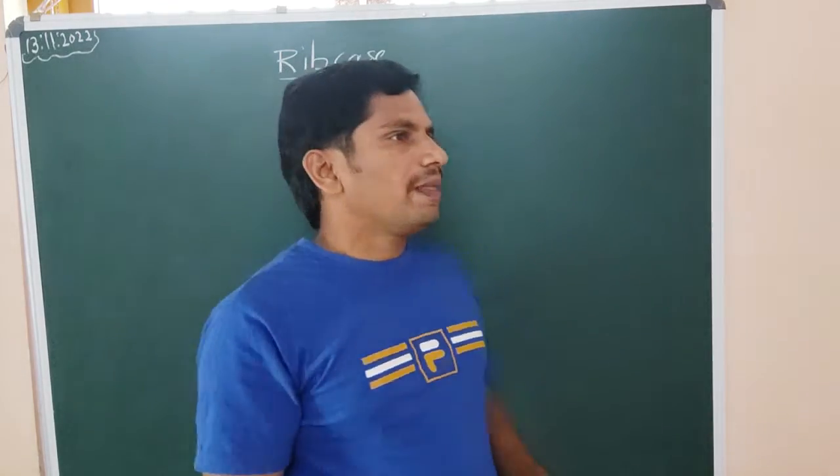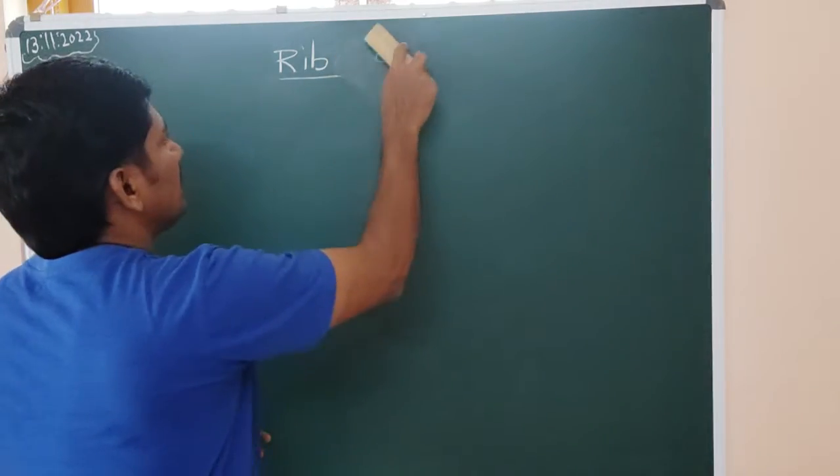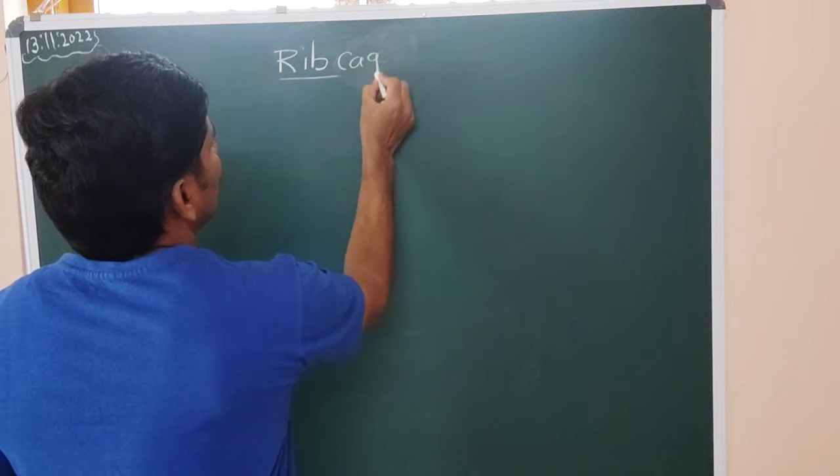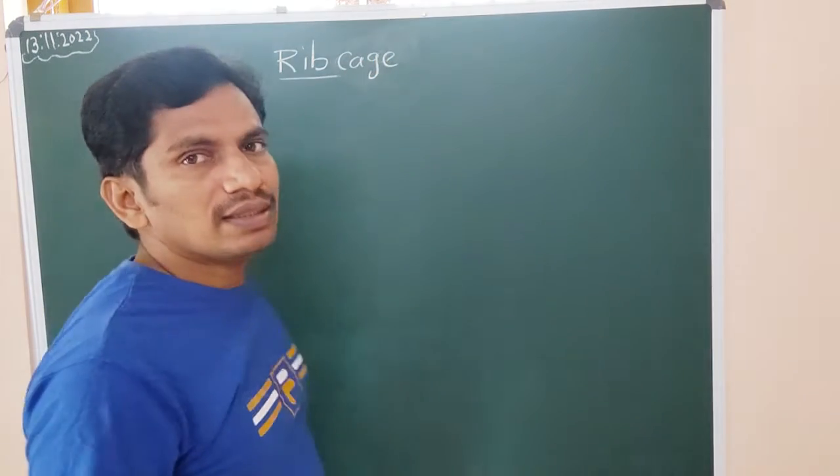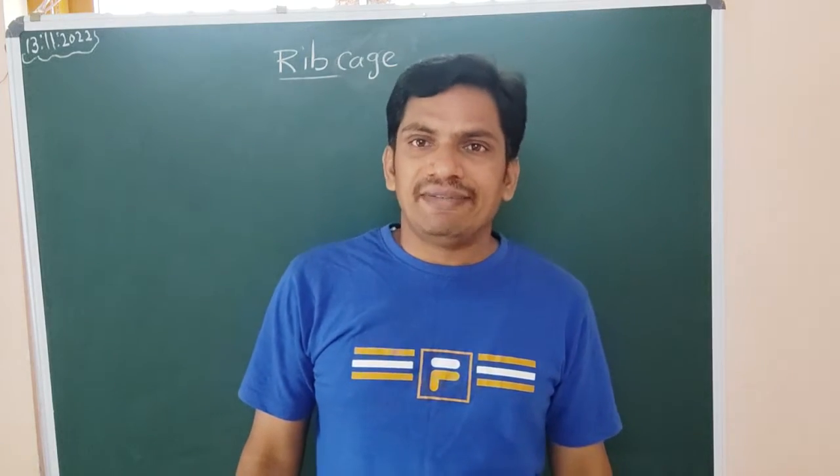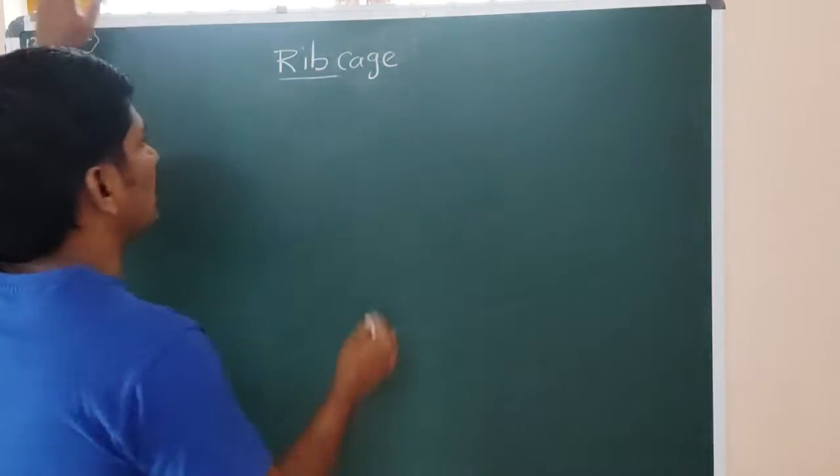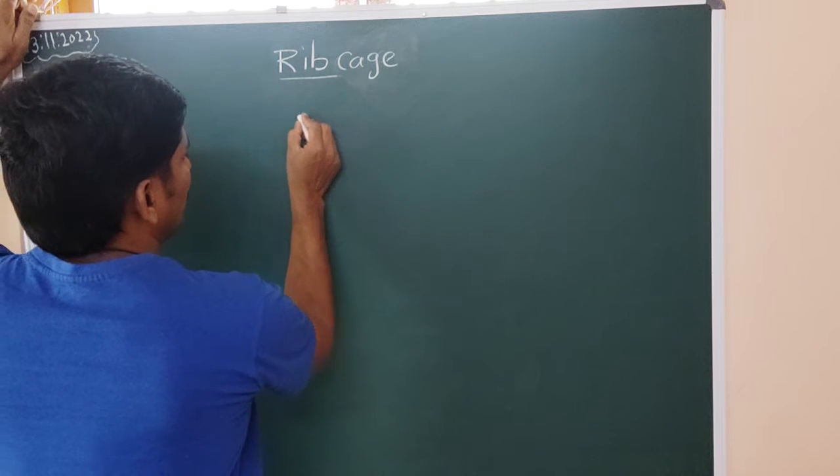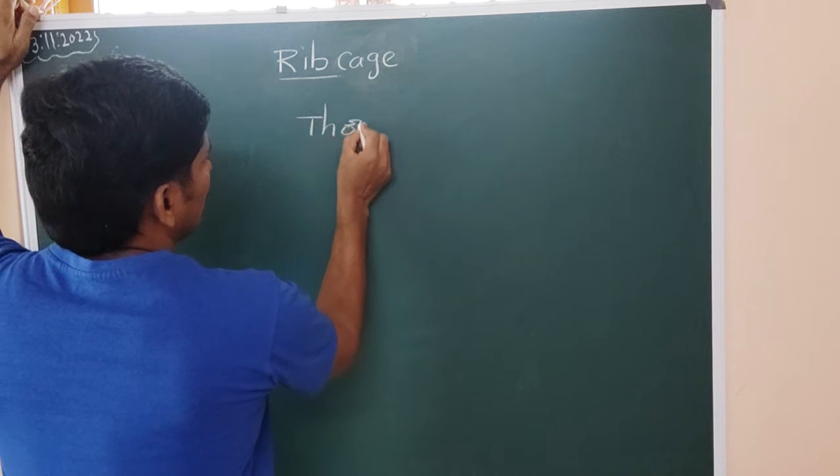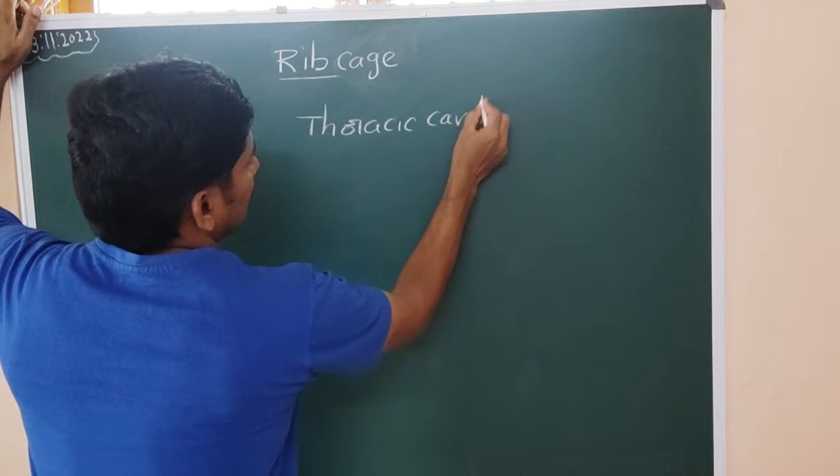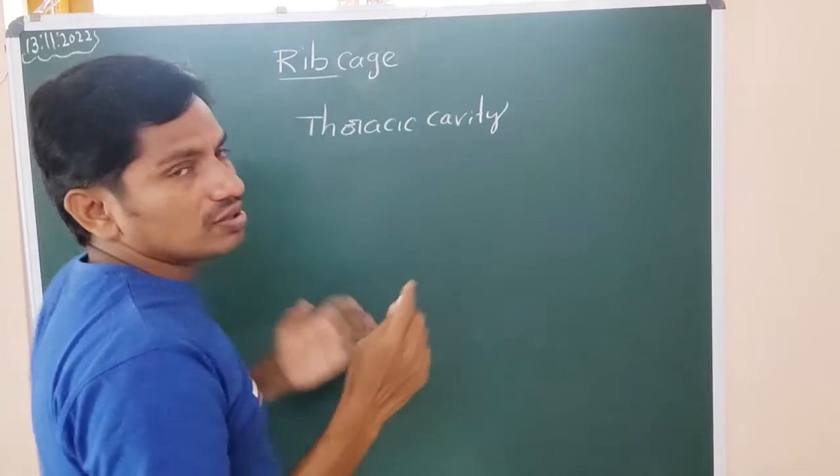Here in the respiratory system, in the human respiratory system, you know that one pair of lungs are located in thoracic cavity. So here, how the thoracic cavity or the ribcage is formed. Here, thoracic cavity is a box-like structure.